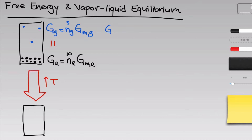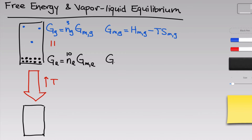We can write each molar free energy in terms of enthalpies and entropies. The molar free energy of the gas equals the molar enthalpy of the gas minus T times the molar entropy of the gas. The molar free energy of the liquid phase equals the molar enthalpy of the liquid phase minus the temperature times the molar entropy of the liquid phase. Note that these molar free energies are not necessarily equal to one another, because the moles of gas and liquid can adjust such that the total free energies are still equal even if the molar free energies of the two phases are not.